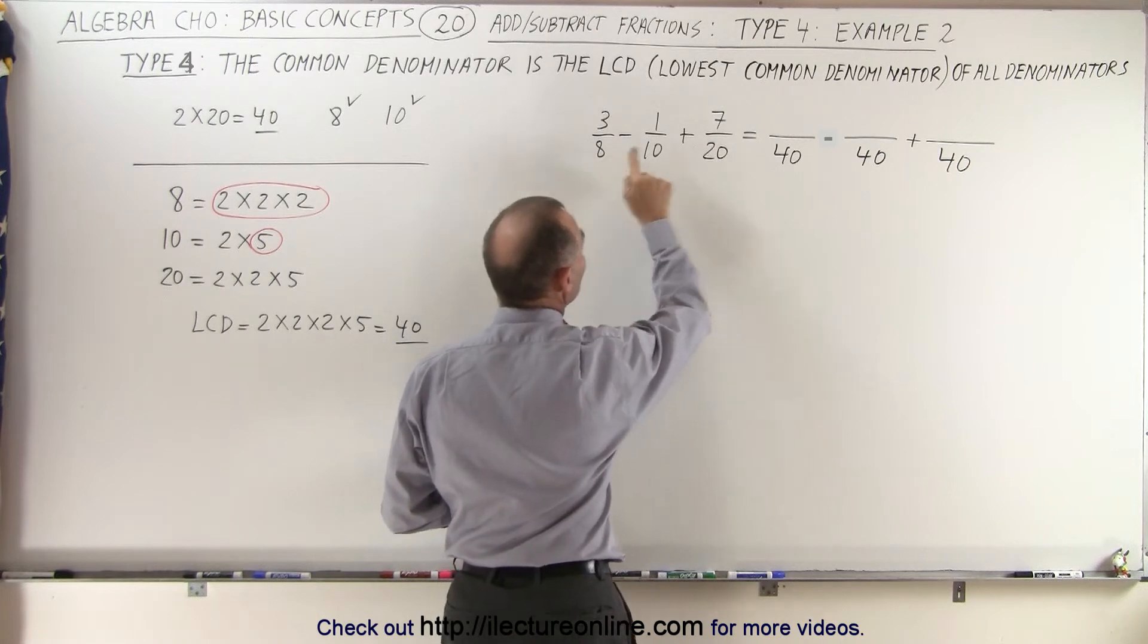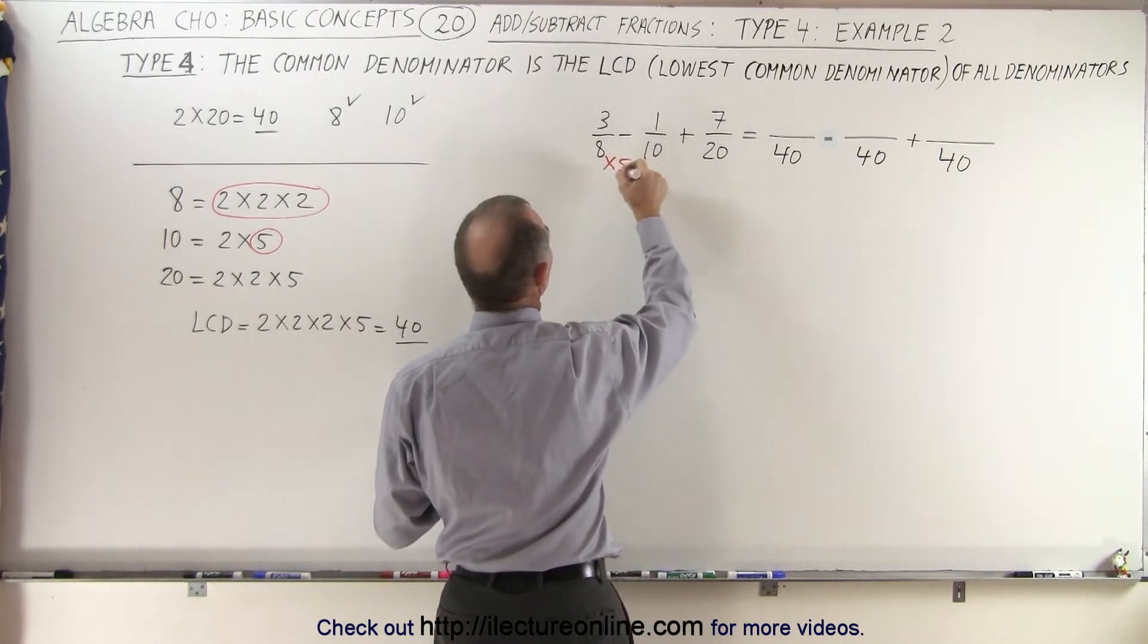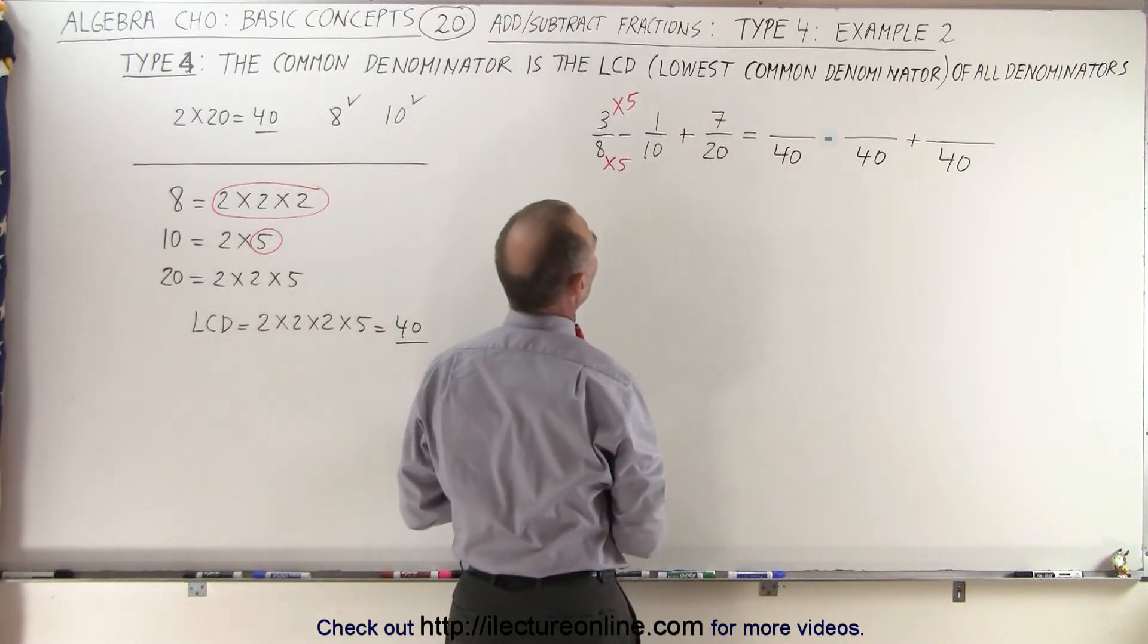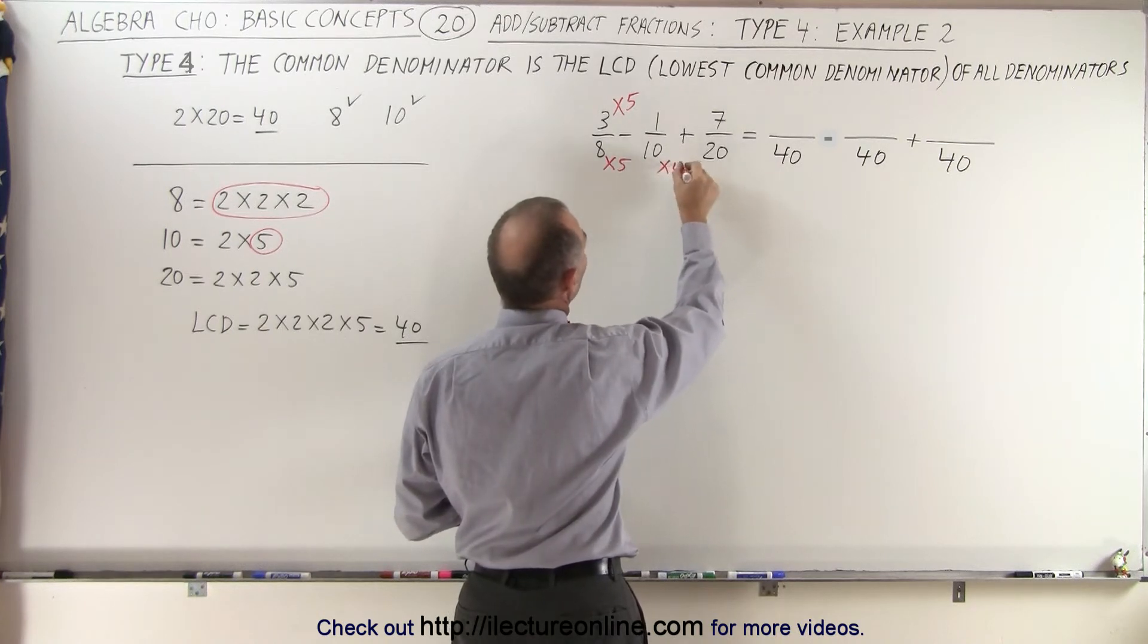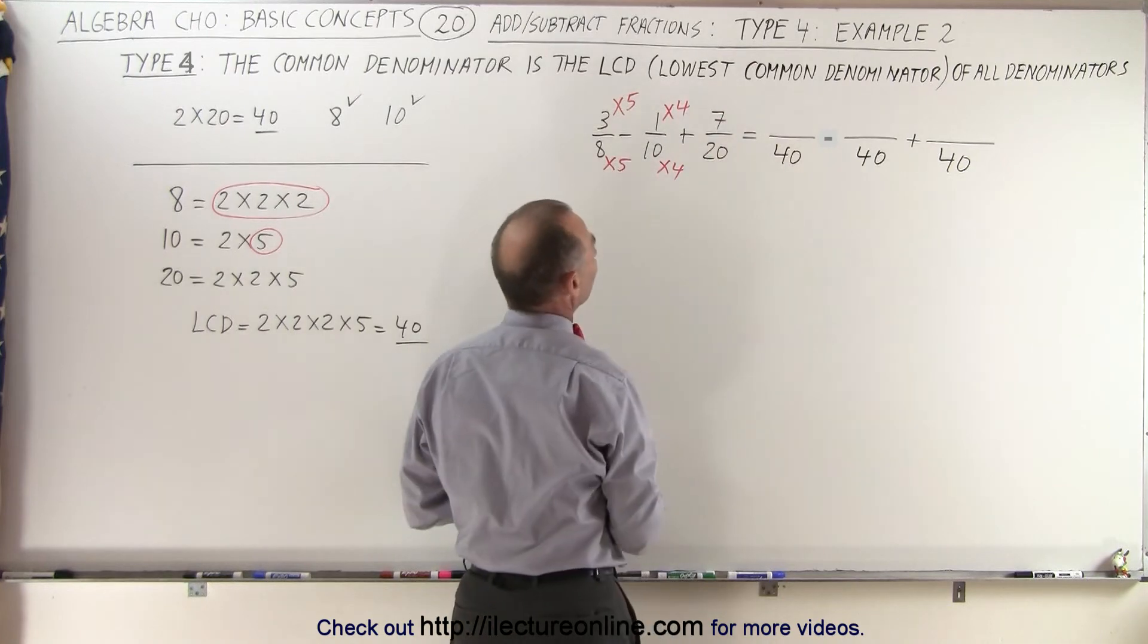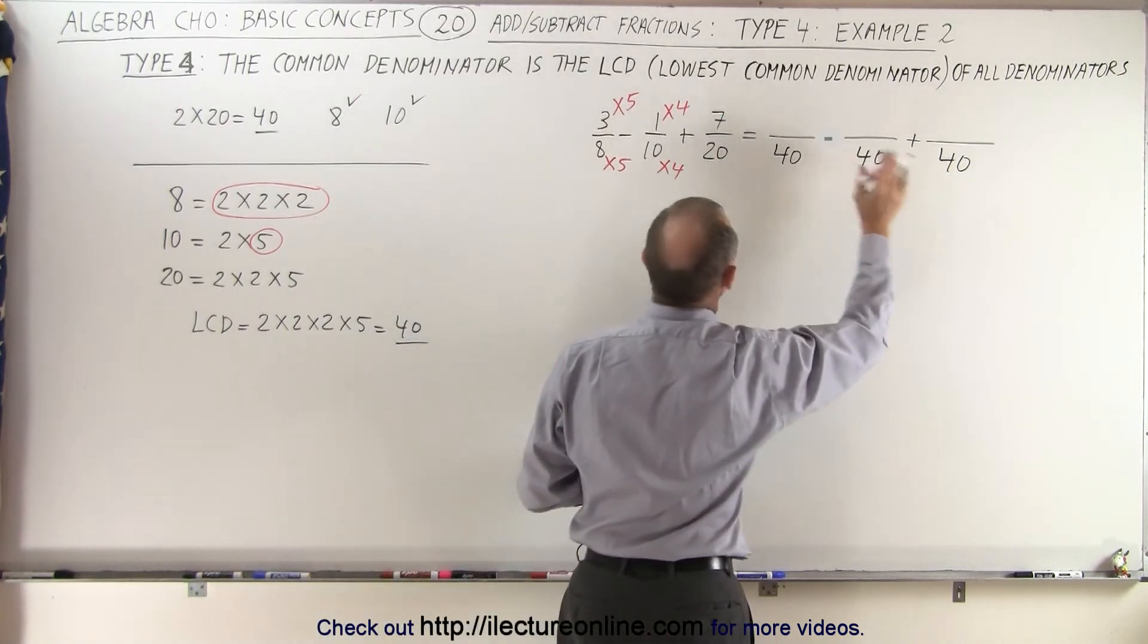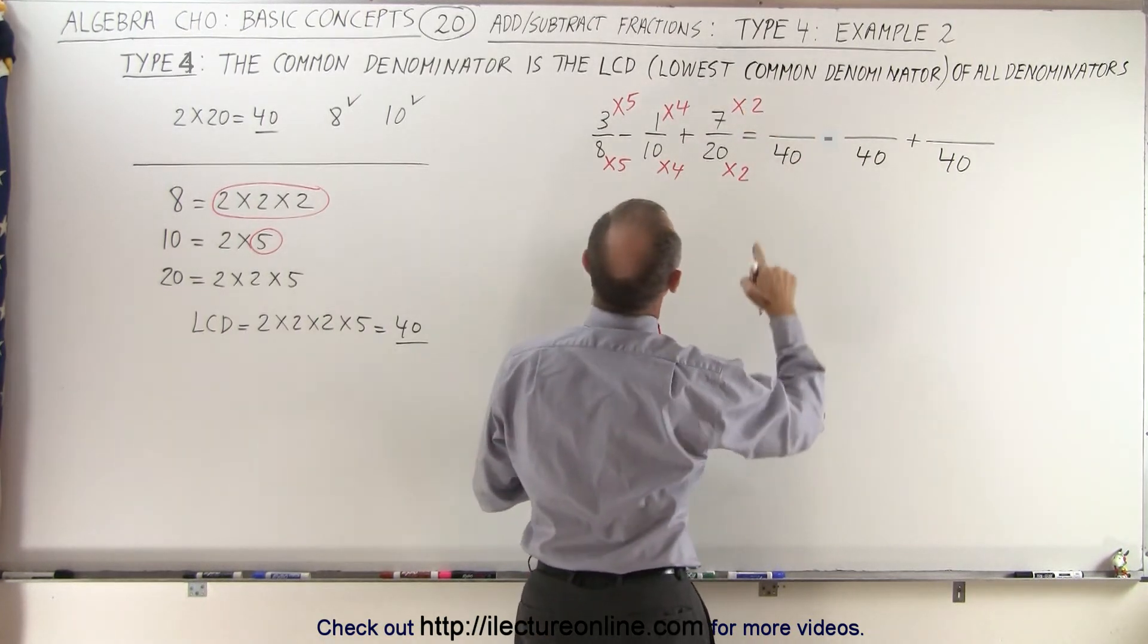8 fit into 40 5 times, so we have to multiply the denominator by 5 to make that into 40, which means we must multiply the numerator by 5 as well. Here, 10, we have to multiply times 4 to make it into a 40. That means we have to multiply the numerator as well by 4. And finally, 20 fits into the denominator twice, so we have to multiply the denominator by 2. And we therefore multiply the numerator by 2.